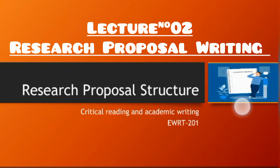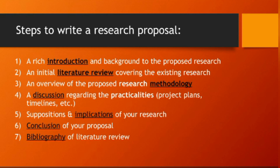First of all, let us look at an overview of the steps of a research proposal. There are basically seven steps: first, an introduction is written; then a literature review is given; then the methodology section is written; then a discussion of the research is done; then the implications of the research are explained; then the conclusion of the research proposal is written; and at the end, the bibliography is written.